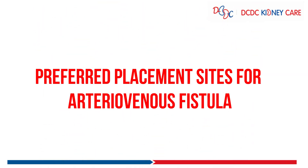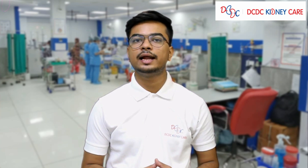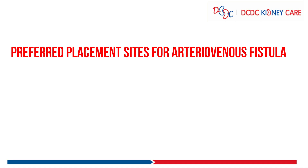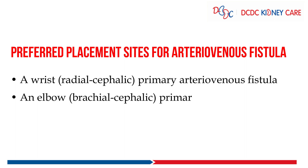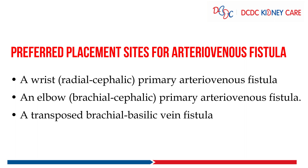Coming to the next part, we will discuss the preferred placement sites of arteriovenous fistula. Ideally, the fistula should be created in the non-dominant hand and in the distal location. Generally, fistulas are created at the wrist — the radiocephalic fistula — in the elbow region — the brachiocephalic fistula — and in the upper arm region — the brachio-basilic fistula.